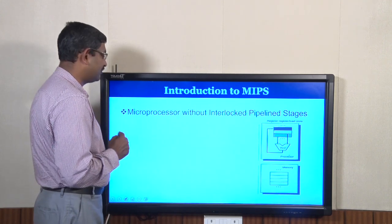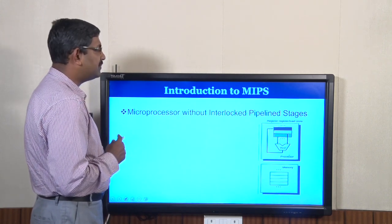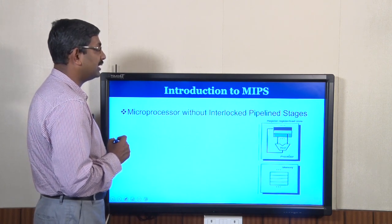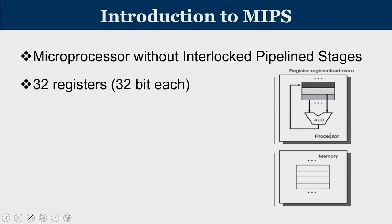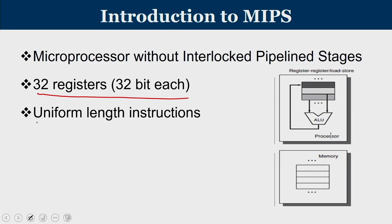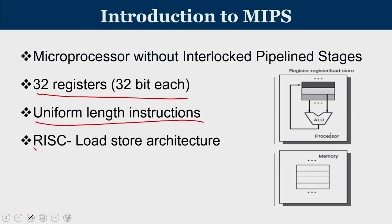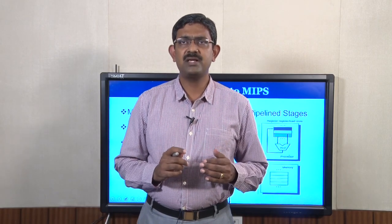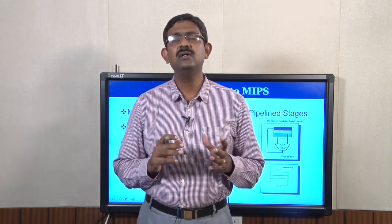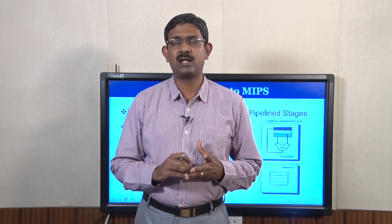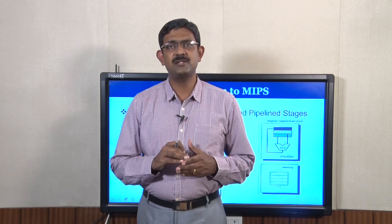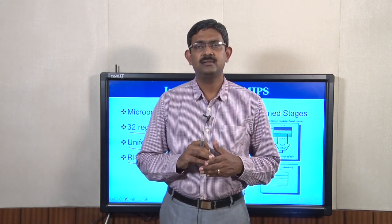Let us understand the important architectural features of the MIPS microprocessor. MIPS is the abbreviation for Microprocessor Without Interlocked Pipeline Stages. This processor has 32 registers, each accommodating 32 bits. All instructions are of uniform length and it follows a load-store architecture — also known as register-register architecture.